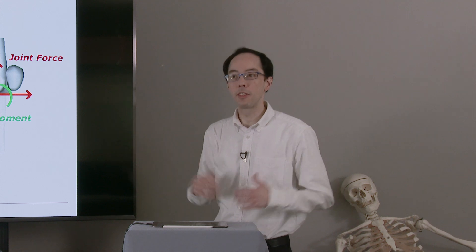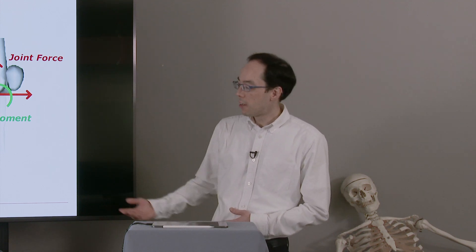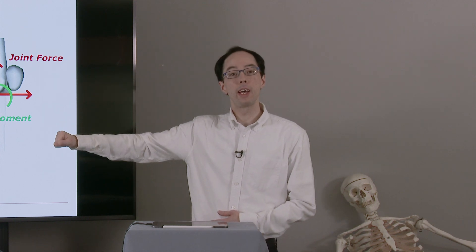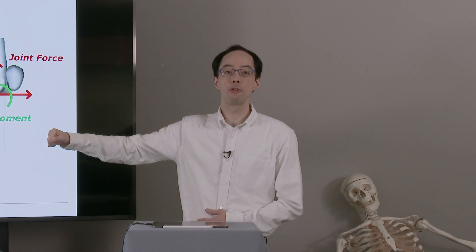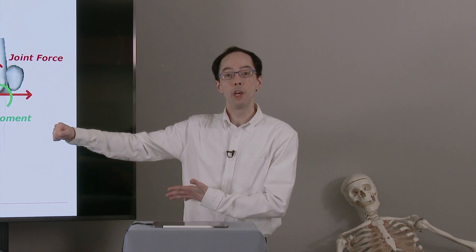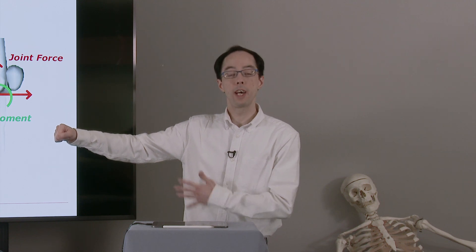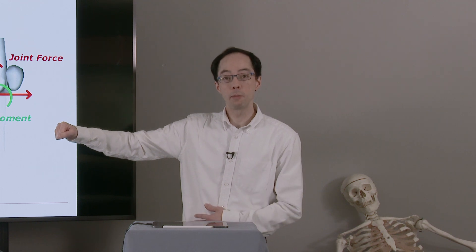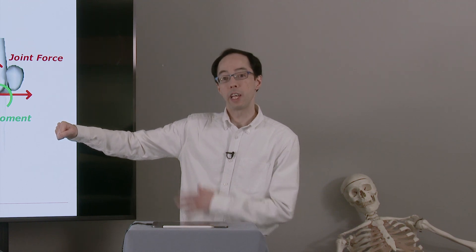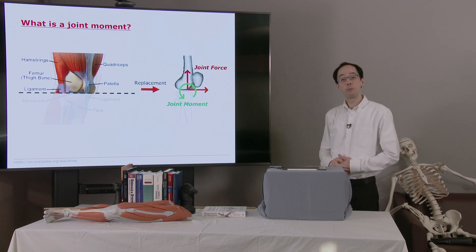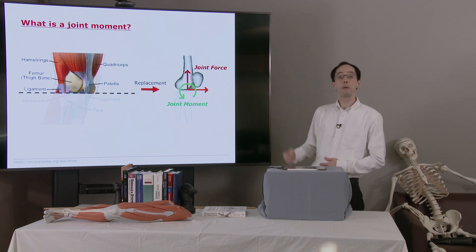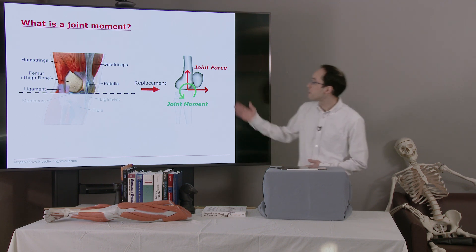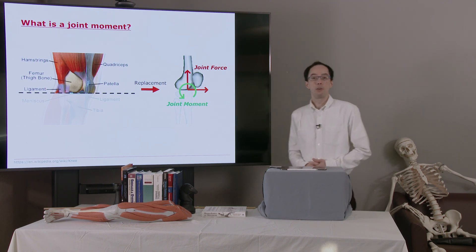Think about this little experiment. Hold your arm out and just let your muscles relax — your arm is not moving, so we have no net joint moments at the elbow. Now, keep your arm where it is, still not moving, but tense all your muscles up. We still have no acceleration, so the net joint moment is still zero, but there's going to be a lot more force in the joint when our muscles are tense. So that's an important distinction of what we're computing here.